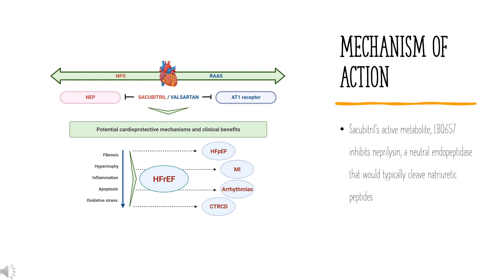Under normal conditions, neprilysin breaks down other vasodilating peptides and also vasoconstrictors such as angiotensin-1 and 2, endothelin-1, and amyloid beta protein. Therefore, the inhibition of neprilysin leads to reduced breakdown and increased concentration of endogenous natriuretic peptides, in addition to increased levels of vasoconstricting hormones such as angiotensin-2. However, when combined with valsartan, this results in blocking of angiotensin-2 at its receptor, preventing the vasoconstrictive effects and resulting in a decrease in vascular resistance and blood pressure. Cardiovascular and renal effects of Secubitril are a result of the increased levels of peptides that are normally degraded by neprilysin.